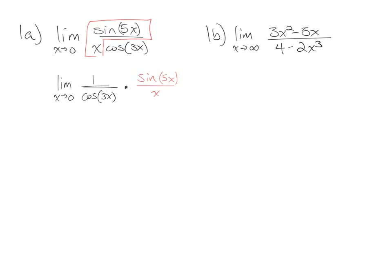We're really close to having sine of 5x over 5x. What I need to do is divide sine of 5x by 5, putting a 5 down in the denominator with x. So I'm multiplying this whole fraction by 5 in the denominator and must do the same in the numerator. Now this part goes to 1, and for the other part I can substitute 0 in for x. The cosine of 3 times 0 is the cosine of 0, which is 1. So this leaves me with 5 over cosine of 3 times 0, which is 5 over 1, which is 5.